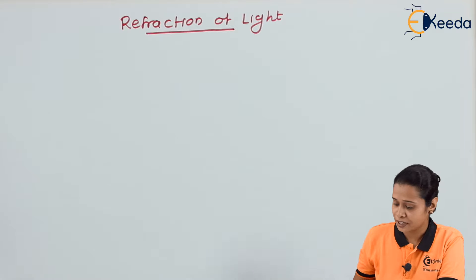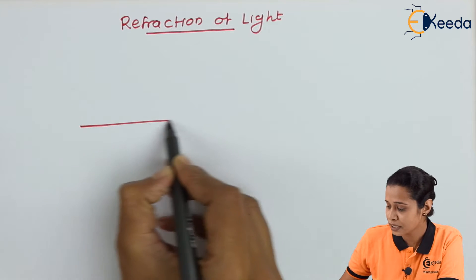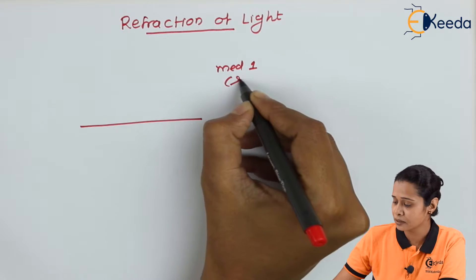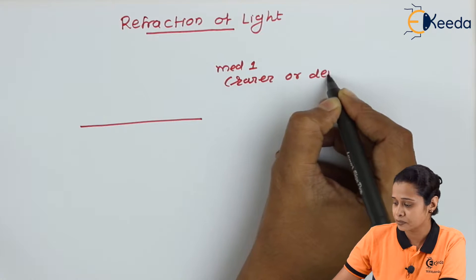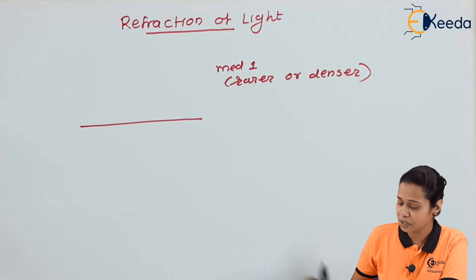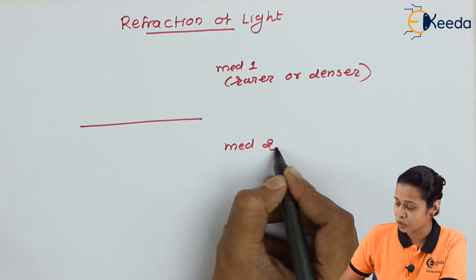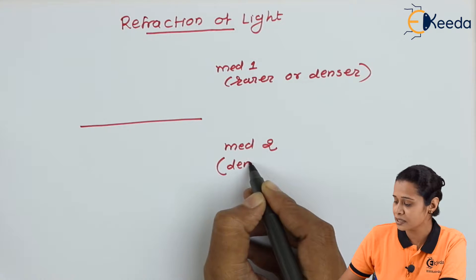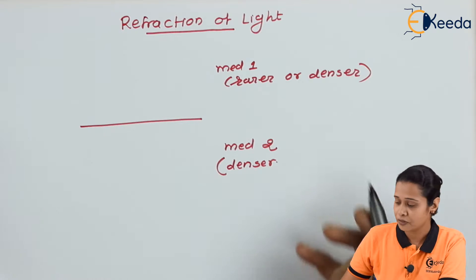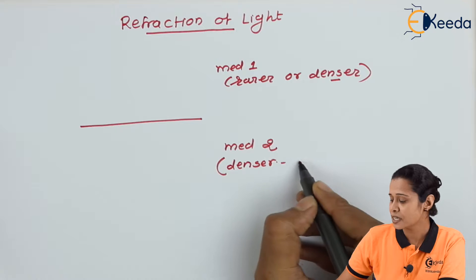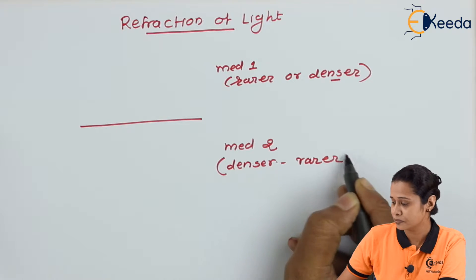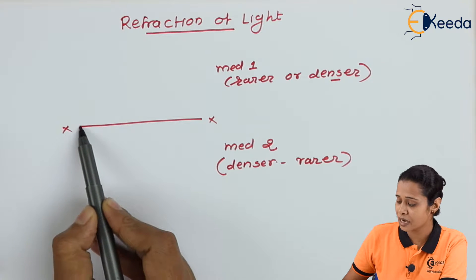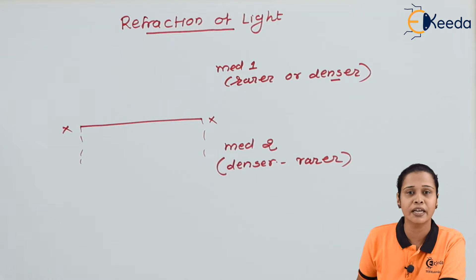In case of refraction, we need two mediums. Let us consider medium 1 — it can be anything, rarer or denser — and medium 2, which can also be anything. Suppose the first medium is rarer, then the second medium is denser, and if the first medium is denser, then the second medium is rarer. Now, this is the plane surface XX'. This glass plate is behaving like medium 2.